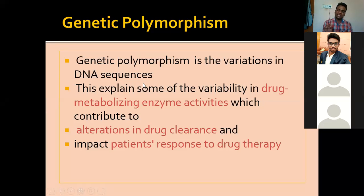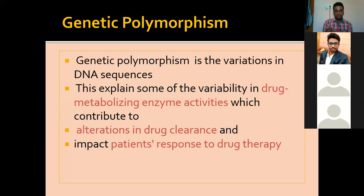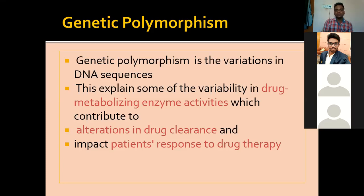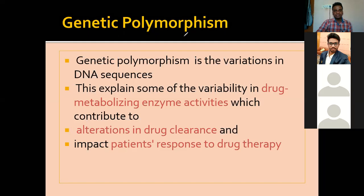These enzymes are nothing but proteins, and these proteins get synthesized from translation. Translation happens as a result of transcription, which is again from DNA. So everything - all these proteins and enzymes - whatever is being synthesized depends on that DNA. That means there is something happening at the DNA level that causes this polymorphism at the enzyme level. Because of that, ultimately there will be variation in the metabolism enzyme activity.